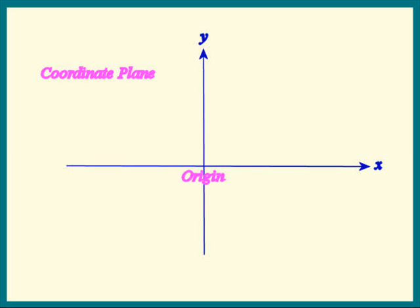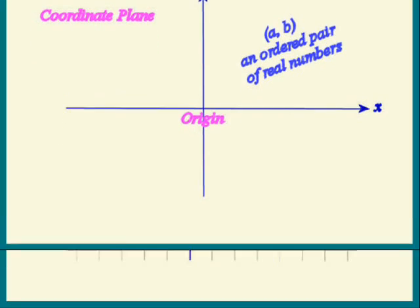He then tried to establish a one-to-one correspondence between points in this coordinate plane and pairs of real numbers. Let's see whether we could figure out what he did.